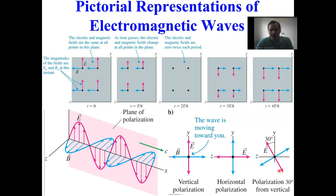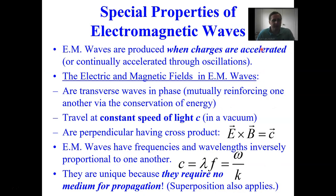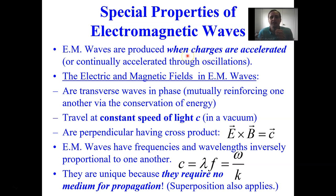Electromagnetic waves are produced when charges are accelerated — continually, through oscillations most typically. A stationary charge produces only an electric field (electrostatics). A moving charge produces a magnetic field. An accelerating charge produces an electromagnetic wave. Each level of motion brings greater complexity.